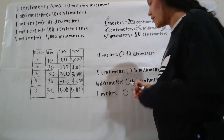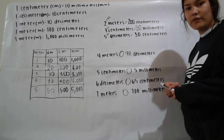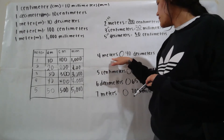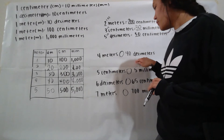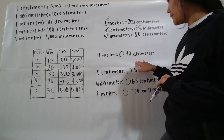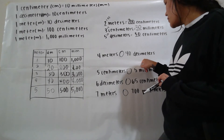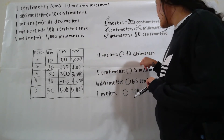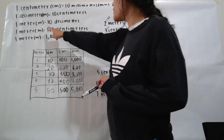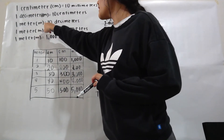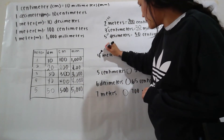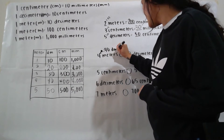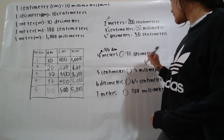Now we're going to compare using less than, greater than, or equal to. For 4 meters and 40 decimeters: we need to see which unit is smaller, then write both measurements in that unit. Decimeters is smaller, so we write 4 meters in decimeters. There are 10 decimeters in 1 meter, so 4 times 10 equals 40 decimeters. We're comparing 40 decimeters and 40 decimeters — they are equal.